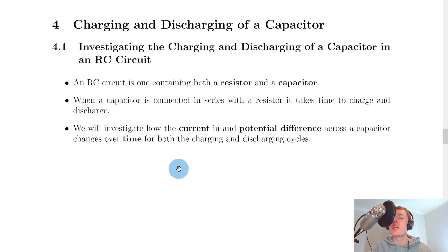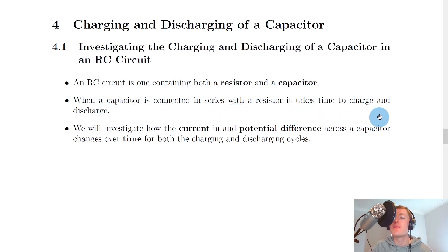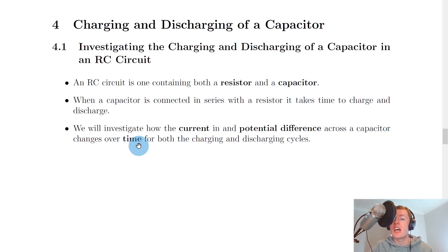Before we look at the experiment for charging a capacitor, we just need to look at what is meant by an RC circuit. An RC circuit is one containing both a resistor and a capacitor — the R stands for resistance and the C stands for capacitance. When a capacitor is connected in series with a resistor, it takes time to charge and discharge. We're going to investigate how the current and potential difference across a capacitor changes over time for both the charging and discharging cycles.